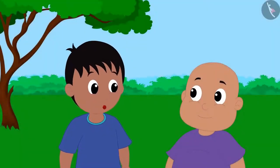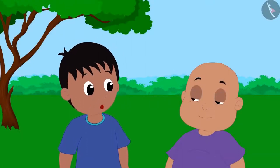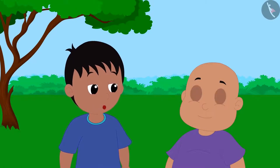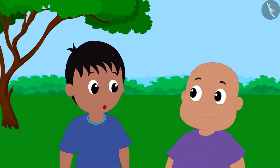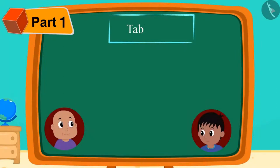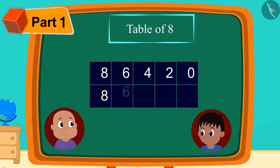Now, Raju is telling Bablu that he can easily make a table of 8 using a similar pattern. Raju once again made such a table. Now he filled these patterns in both lines.